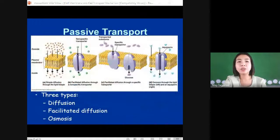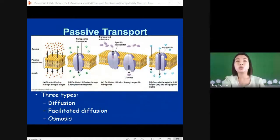Let's start with passive transport. Passive transport is the movement of materials across the cell membrane without using energy and it goes down the concentration gradient. We have three types of passive transport: diffusion, facilitated diffusion, and osmosis.